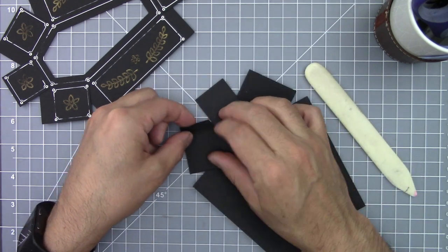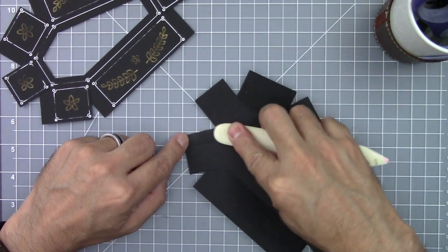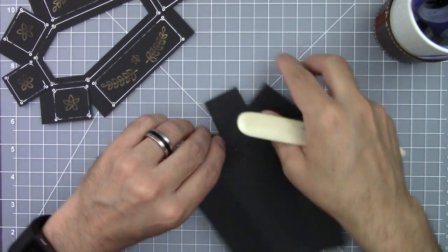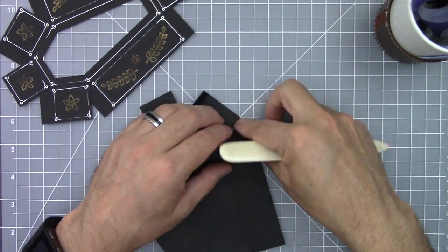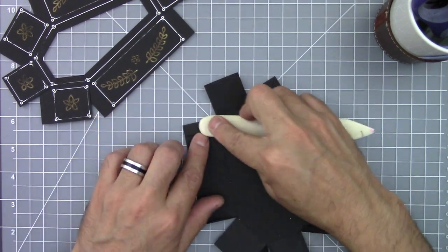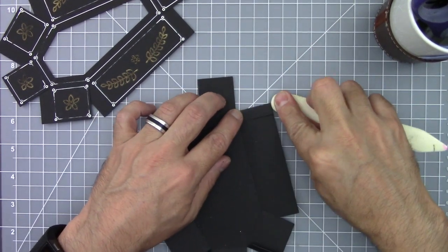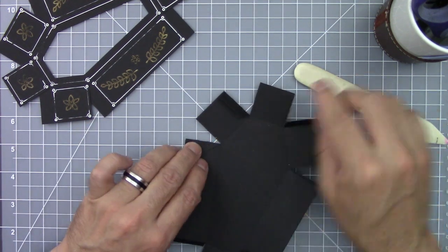The gluing tabs are a little bit tricky. Make sure when you fold them that the innermost part of the tab matches the edge of the cut line. Keep folding all the tabs and creasing them with your bone folder.